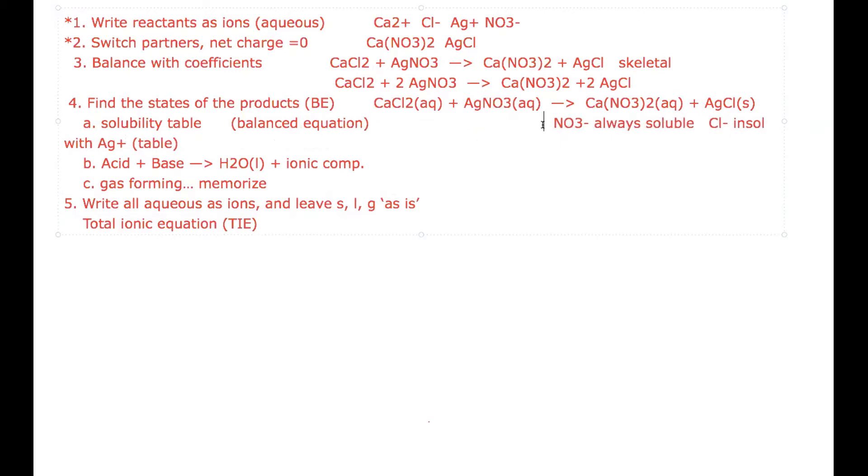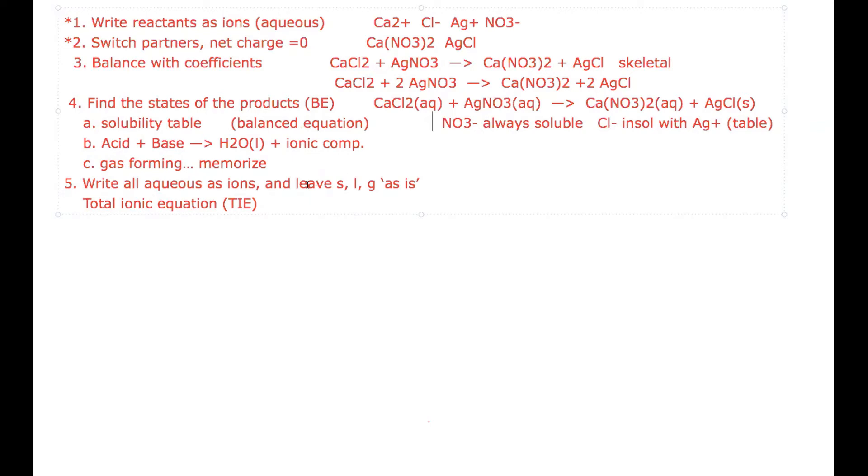Now we can go a step further for this. Step five is to write all aqueous as ions. So this is both products and reactants and leave the other states which are solid, liquid, gas as is. When you're done with this you have what's called a total ionic equation, or can I abbreviate that and call it a TIE? If step four gives you a BE, step four is a balanced equation.